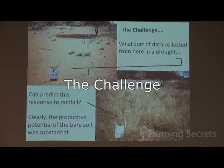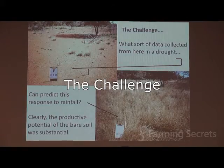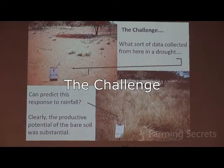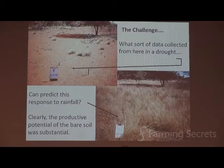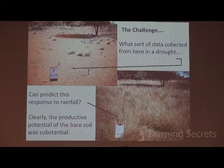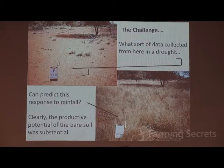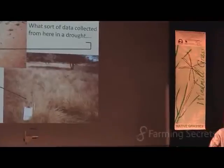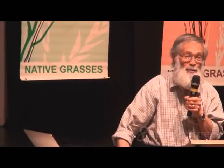Our challenge back in the mid-70s when I started this work was: what sort of data collected from that little bare space between the pegs could have told us that there was a productive potential expressed in the bottom picture after rain fell? Very often our question was: how can we distinguish bare but productive soil from bare but unproductive soil? A lot of my colleagues who were mainly botanists used to return to the lab very disappointed — they'd been out to do a survey and there were no plants. I'm never disappointed. Whenever I go out into the bush, there's always some soil to look at. It's got something to tell me every time I go.